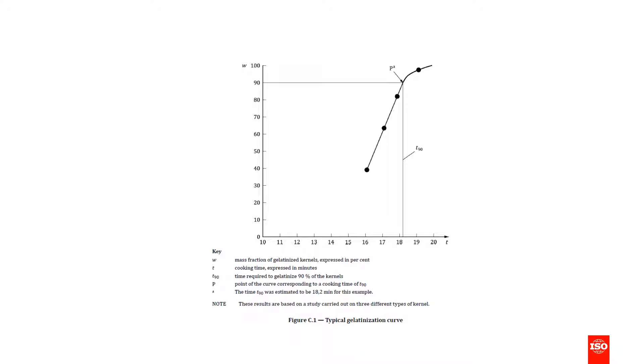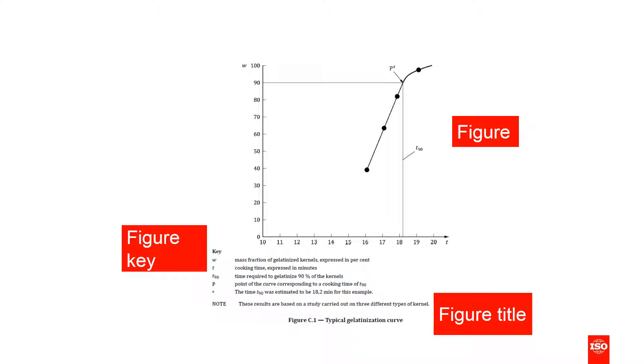This is an example of a typical figure. It follows similar rules to tables, such as always having a figure number and title. You can see that the key comes in between the figure and the title, and that key items are written without initial capitals and without full stops.